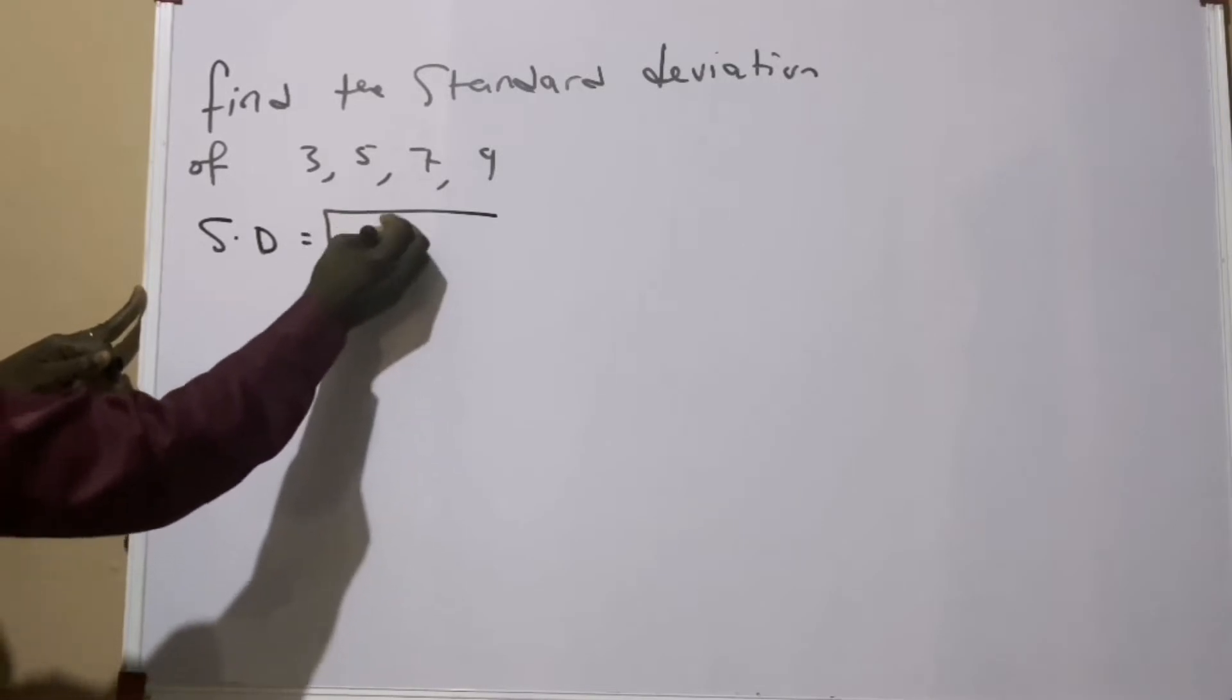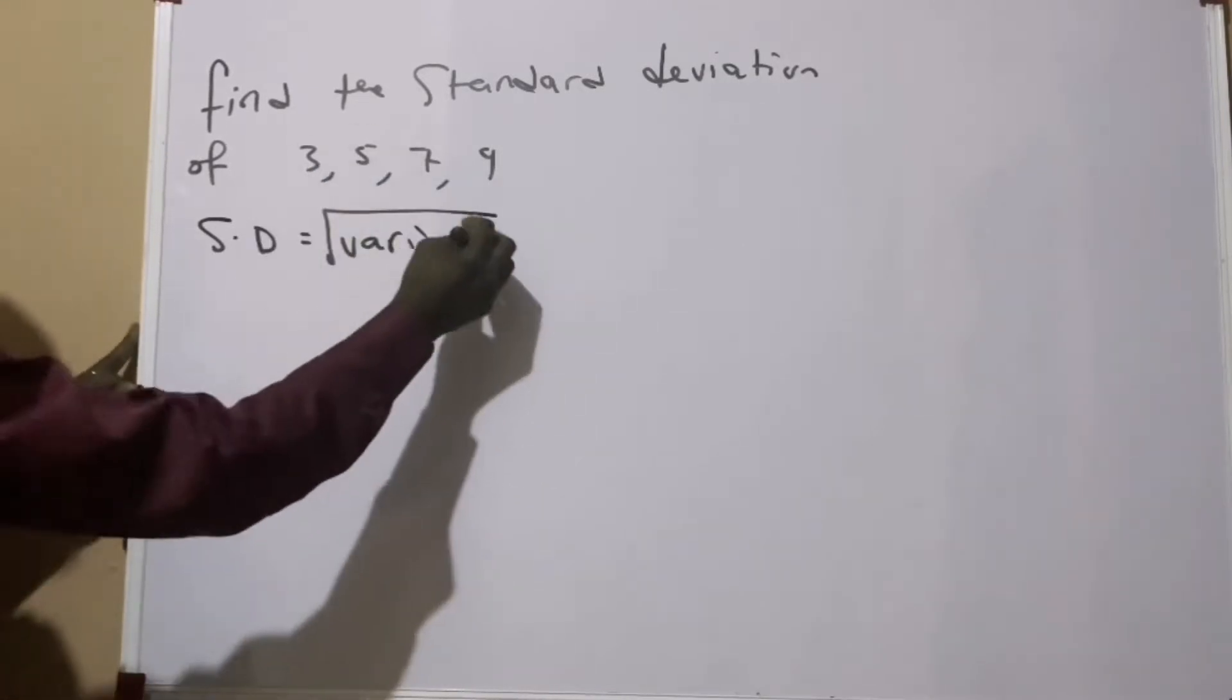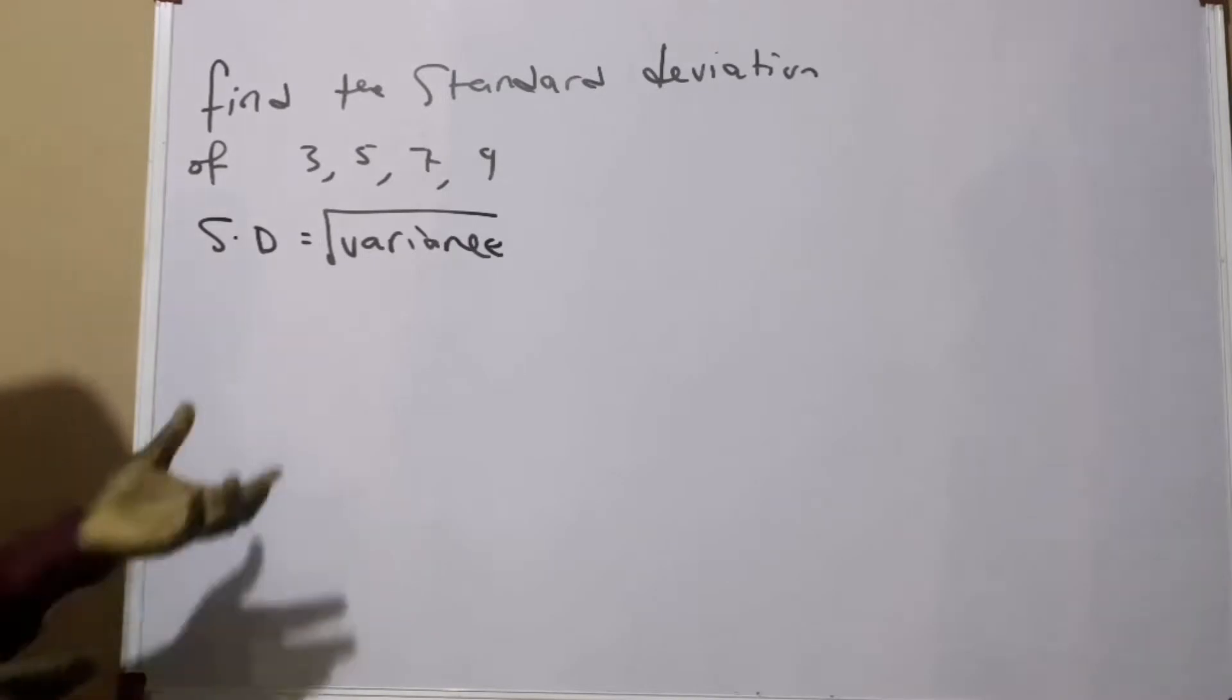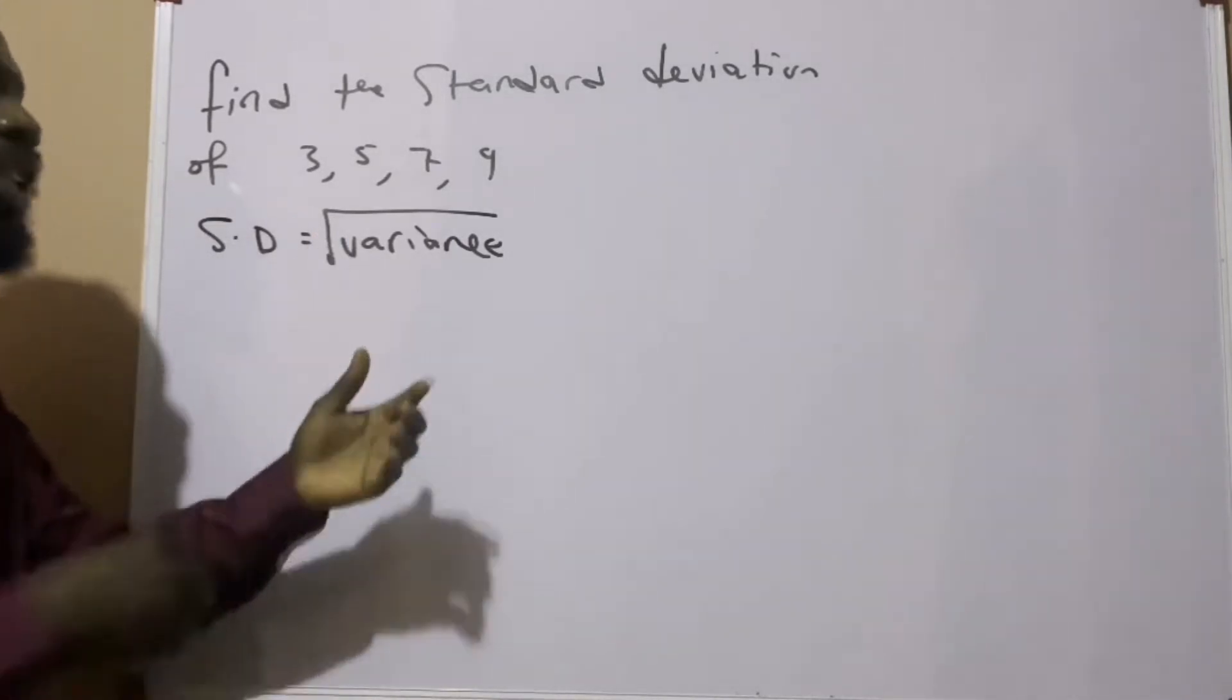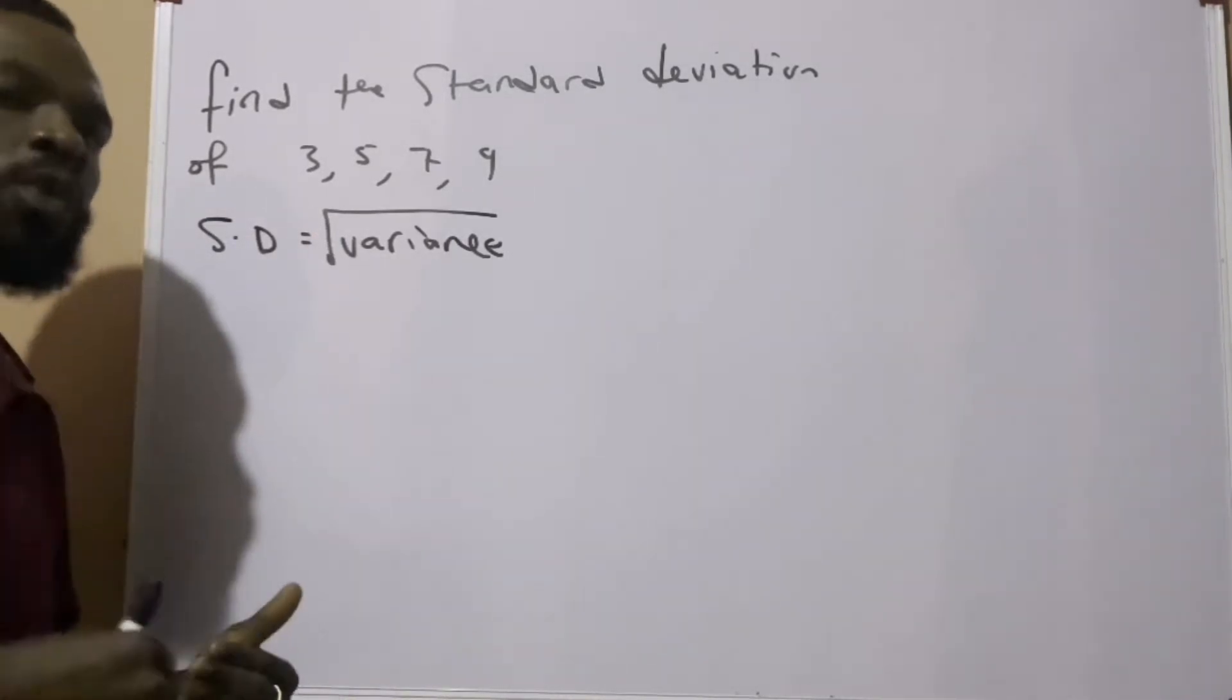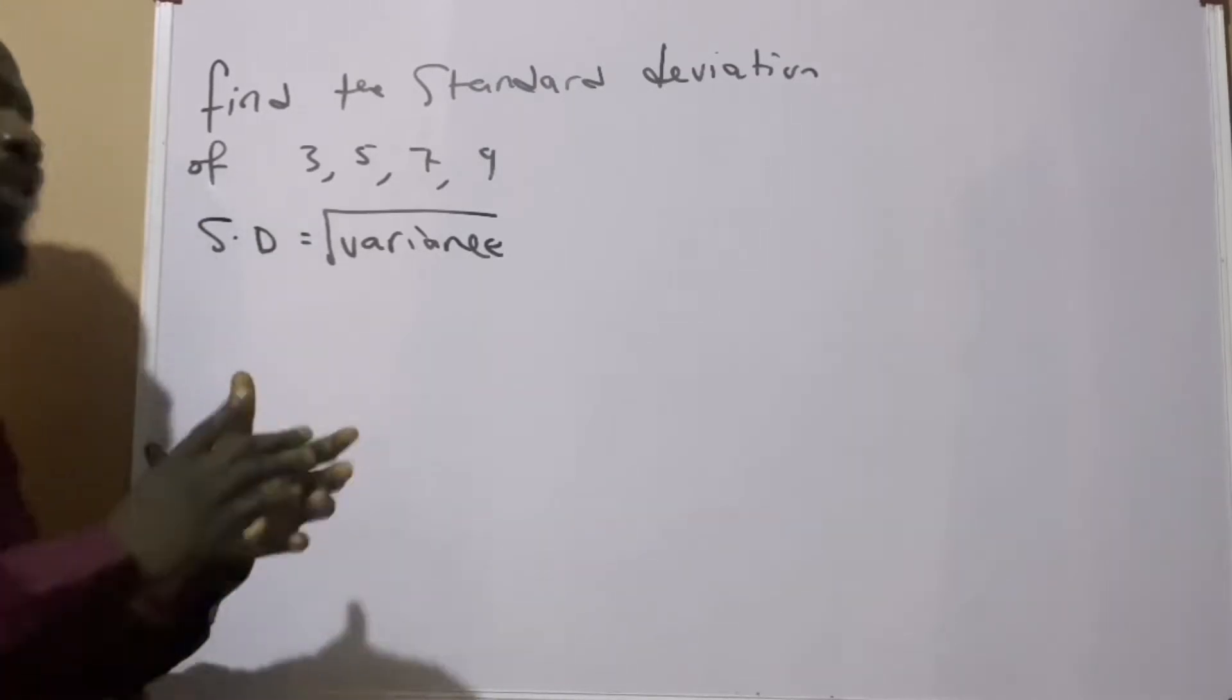Now like I said, standard deviation is the square root of variance. So it means for us to be able to solve for standard deviation, first we need to calculate for variance. Then when we look for the square root of variance that we have, we get the standard deviation.